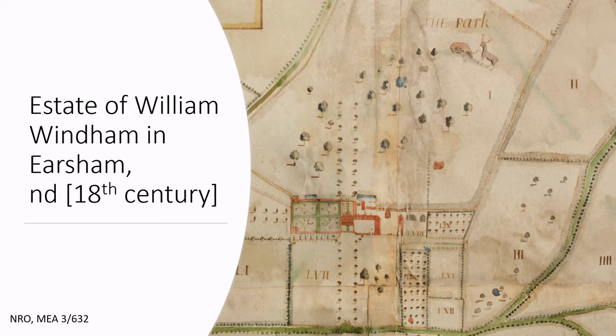This map shows the estate of William Wyndham in Ursham. It contains drawings of the hall and outbuildings, still in place today, and the formal gardens. The wider estate includes deer in the park and trees. Although the map is not dated, it is believed to be from the 18th century.